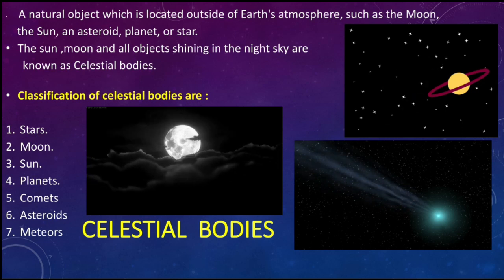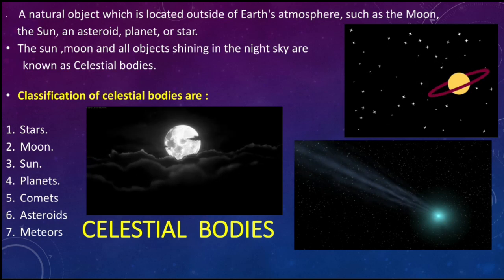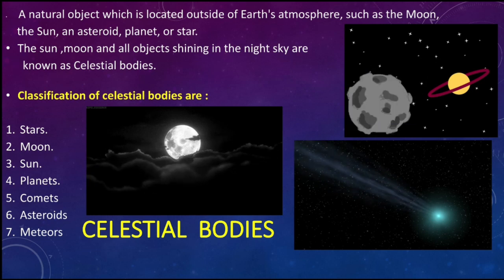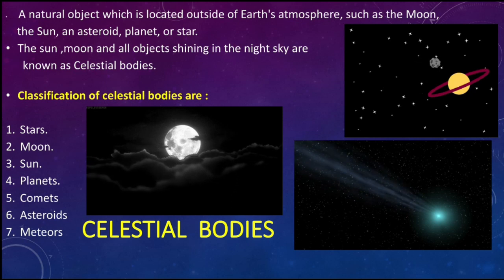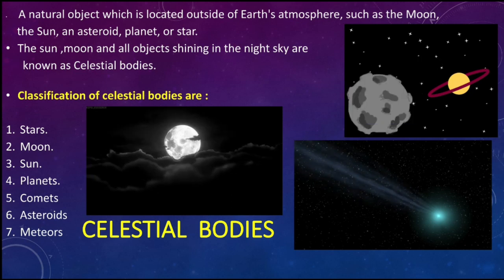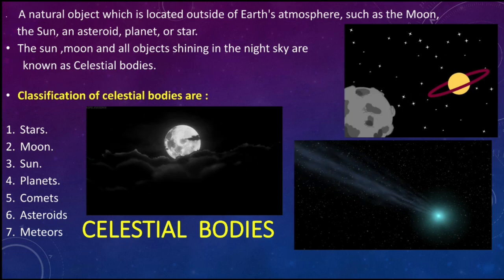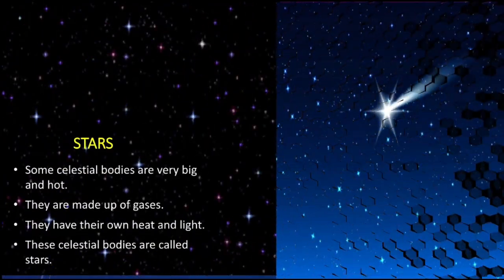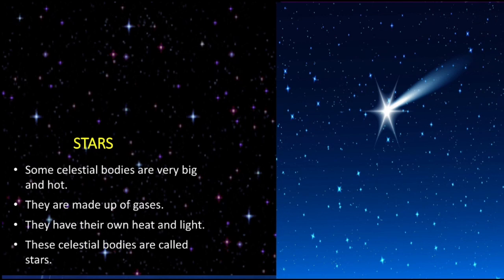The Sun, Moon, and all objects shining in the night sky are known as celestial bodies. Now we are going to see each part of it. First, we are going to see stars. When you look at the night sky, the brightness of the stars looks so beautiful — they give a wonderful shine. So what are stars, actually?